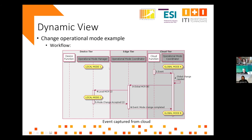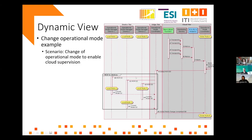In the edge tier, this request is performed, and this results in a local chain operational mode, for example, in the device tier. When the global chain operational mode is completed, we can perform the global chain mode. And this is an example of a specific scenario related to this workflow.